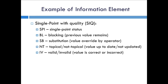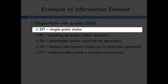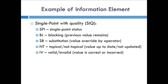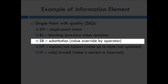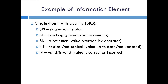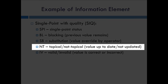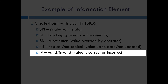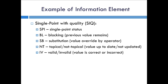A simple example of an information element is the single point with quality, which has five bits: a single point status bit, a bit for blocking so the previous value stays, a bit for substitution to override the value, a bit for topical or not topical to indicate whether the value has been updated — typically used in a data concentrator receiving data from downstream — and a valid or invalid quality bit. This is just one of the 40 different information elements.